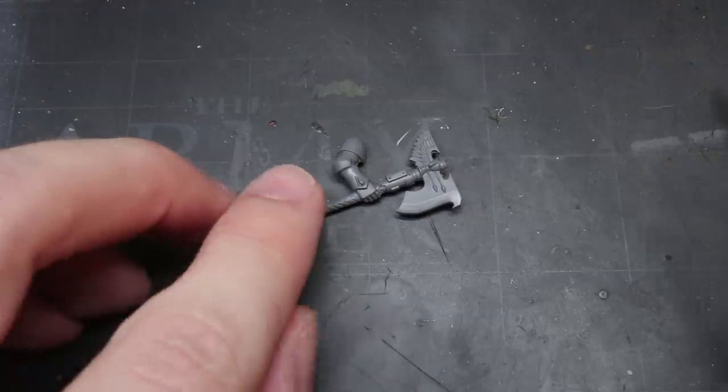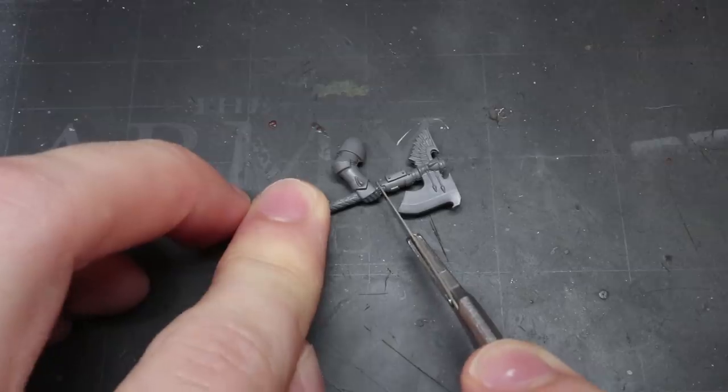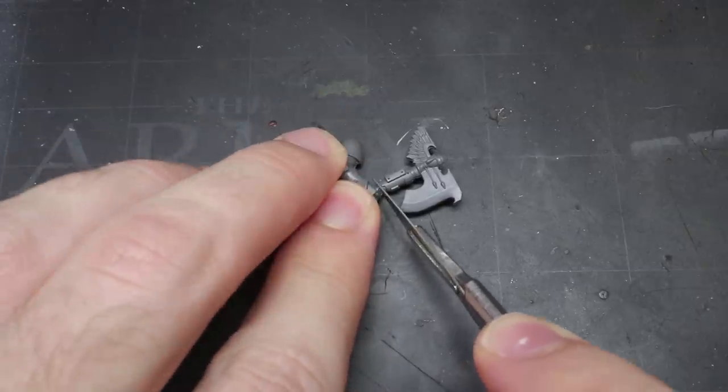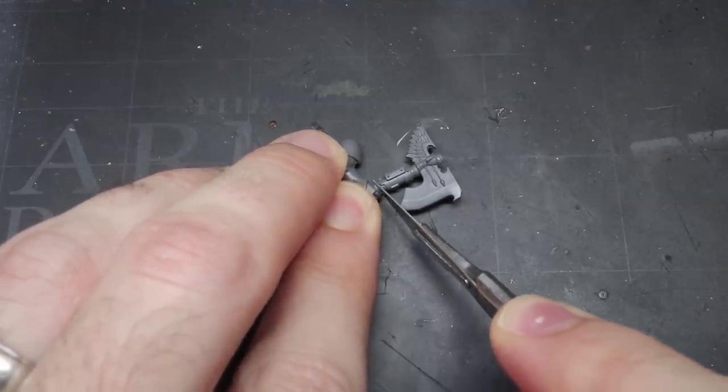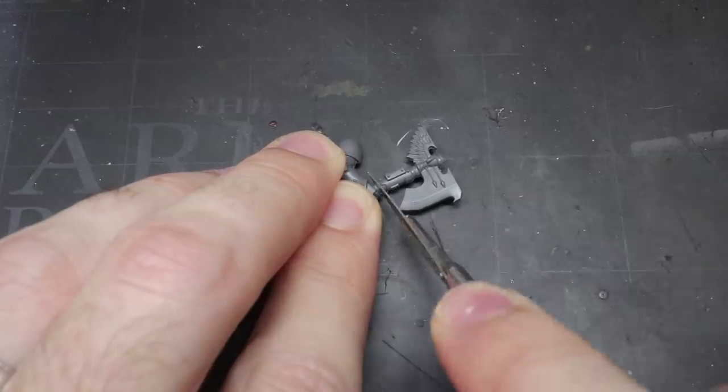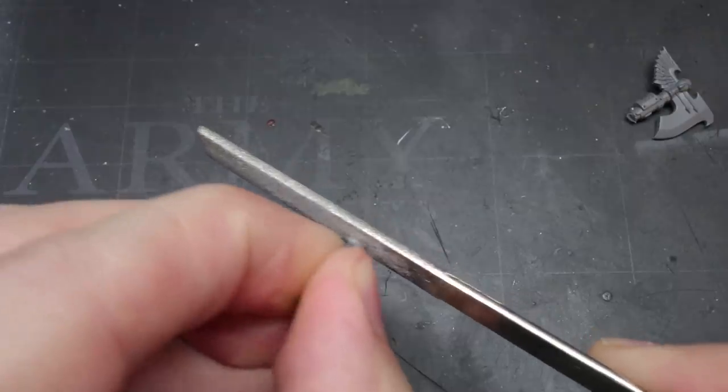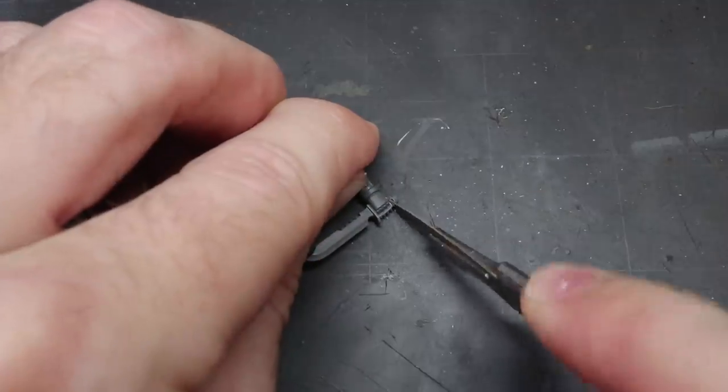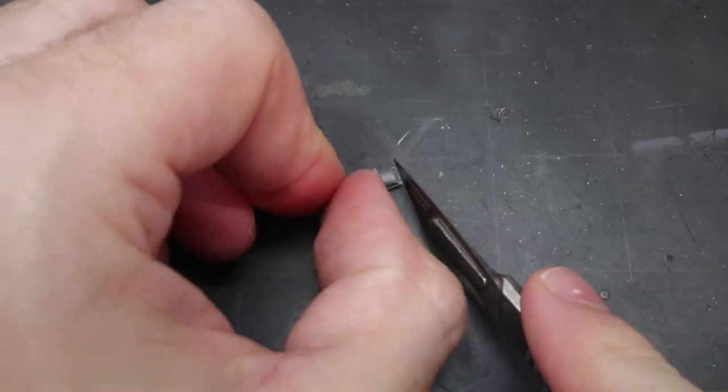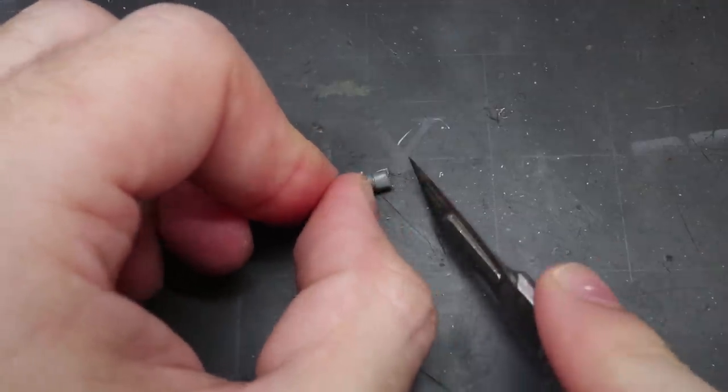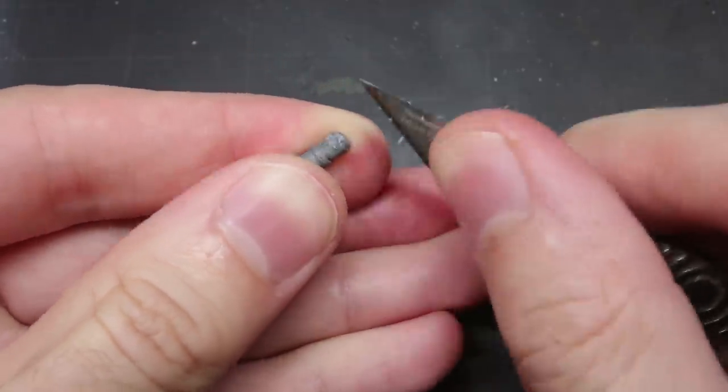I began with one of the axe arms from the Sanguinary Guard kit. This axe was chosen for its very similar appearance to the axe Mortalis that is wielded by Dante. However, I needed to remove it from the arm. So I used my knife to cut above and below the hand before finally filing the cuts flat and smooth. In a similar fashion, I was then able to remove the blade from the Reaver arm as well as trimming away the knuckle duster from the fingers. Finally, I cleaned up the top and the bottom of the hand creating a flat surface that was ready for the next step.